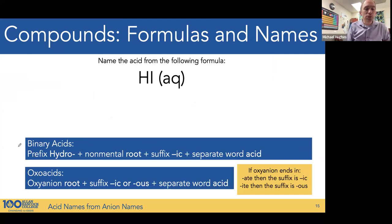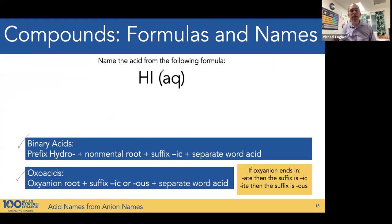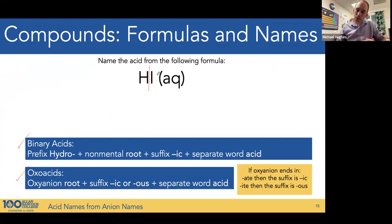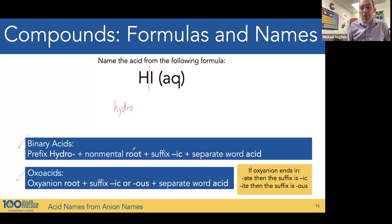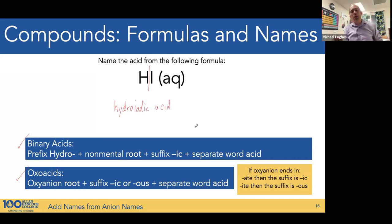Using those rules for binary acids and oxoacids, let's name the following acid. We have the hydrogen cation and the aqueous state indicator — we have an acid. When we dissociate it, we don't have a polyatomic anion; it's monoatomic with no oxygens, so it's a binary acid. We start with the prefix hydro, then the nonmetal root iodine — hydro-iod — with the suffix -ic. Hydroiodic acid.